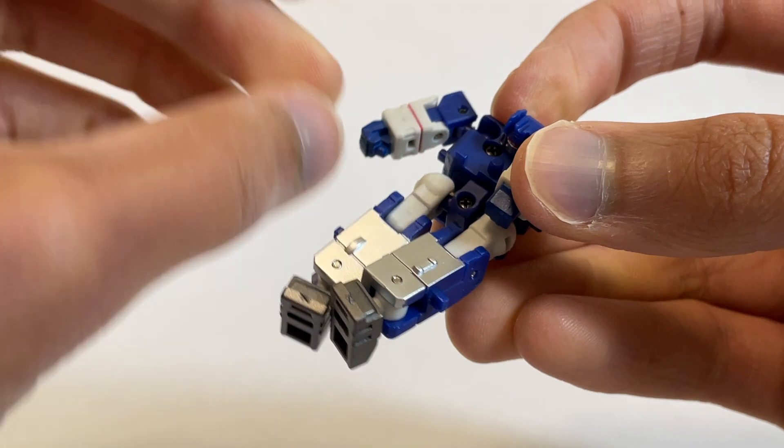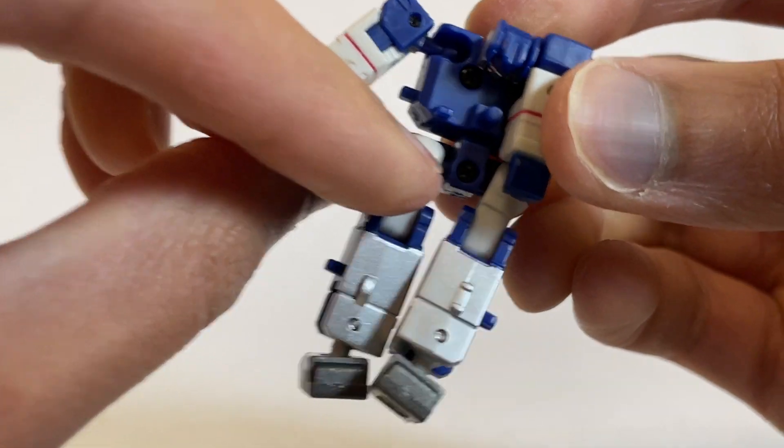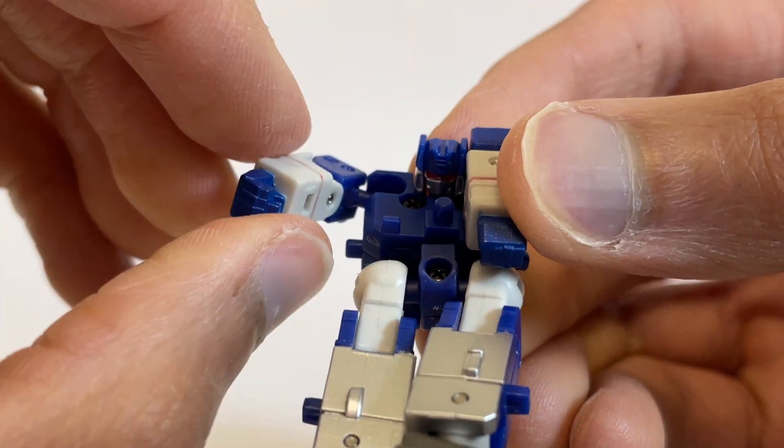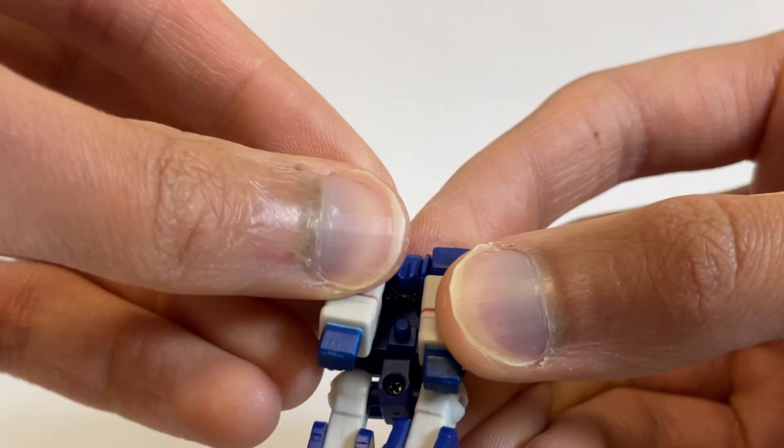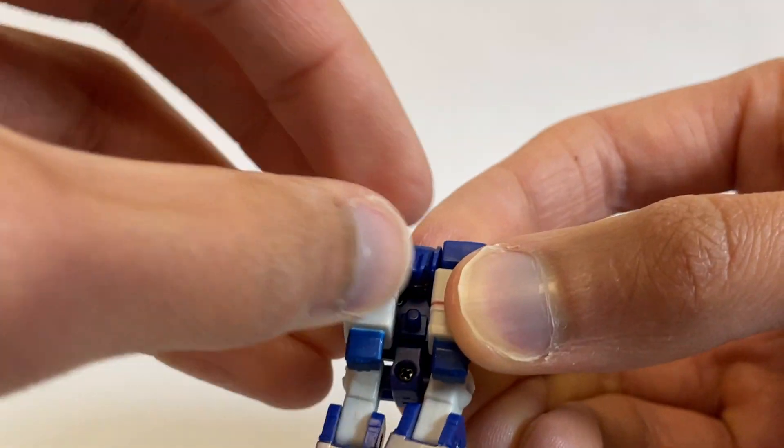And then there's just tabs on the bottom here of Soundwave's back, along with a slot in the bottom of the arm, and everything just lines up, like so.